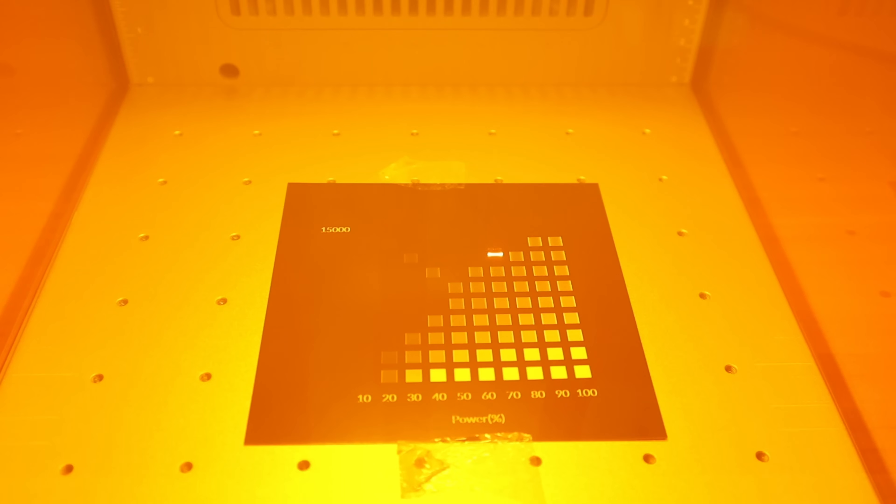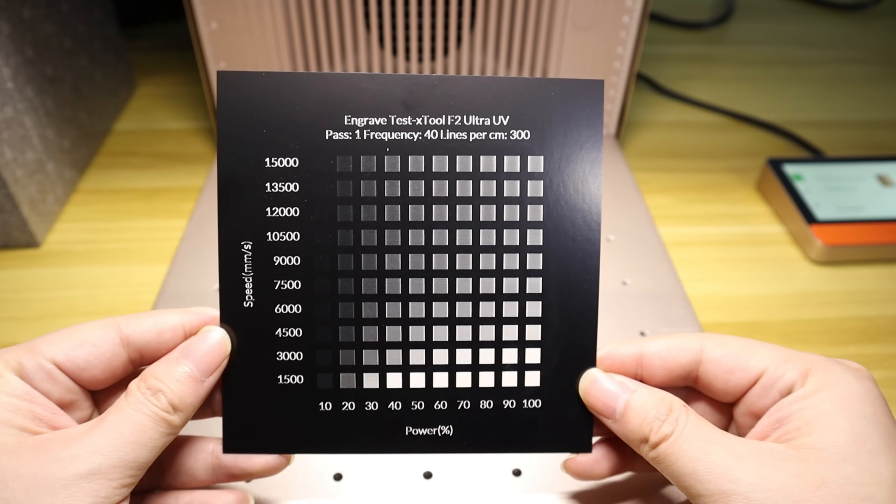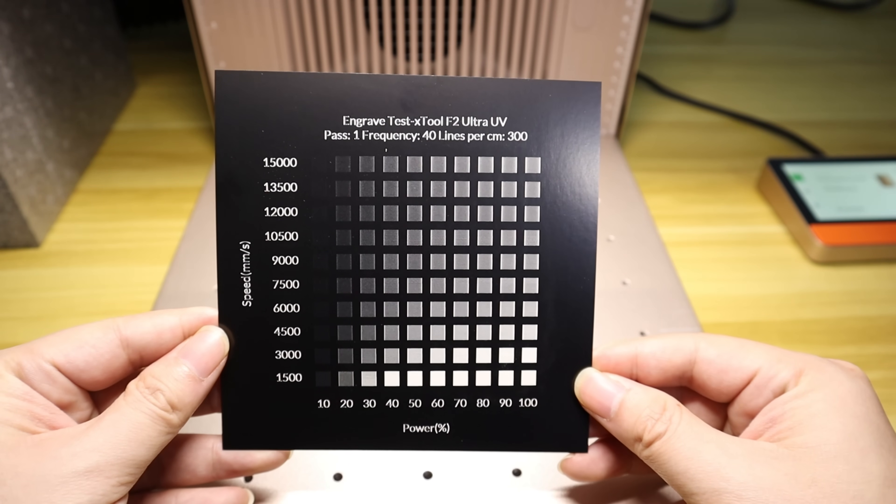Needless to say, the engraving speed of the ACE2-F2 Ultra UV is also impressive. The test results confirm it can indeed reach 15,000 mm per second engraving speed. This translates to exceptional efficiency for laser marking on objects, often completing the marking process in just a few seconds.